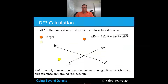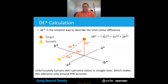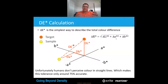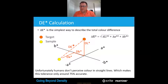The traditional delta E calculation is a straightforward — if a little complicated — one-line formula. It's the L of the standard minus the L of the sample, squared and square-rooted; A of the standard minus A of the sample, squared and square-rooted. The problem is it's only about 75% accurate, which means 75% of the time you'll get good numbers with a good visual match, but 25% of the time you'll get good numbers with a bad visual match, or bad numbers with a good visual match.